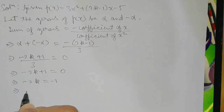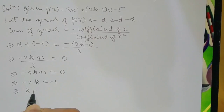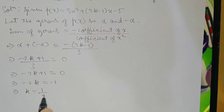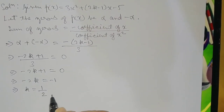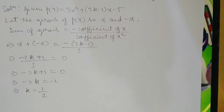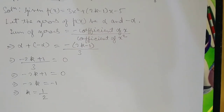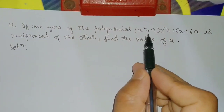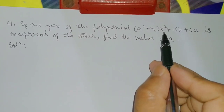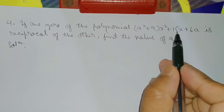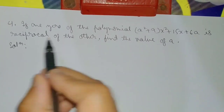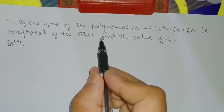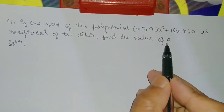Cancelling the minus signs on both sides, 2k equals 1, so k equals 1/2. Question number 4: If one zero of the polynomial (a² + 9)(x² + 15x + 6a) is reciprocal of the other, find the value of a.